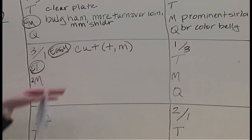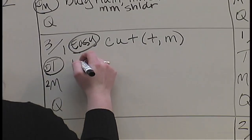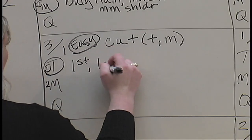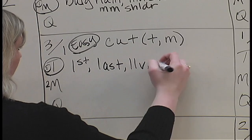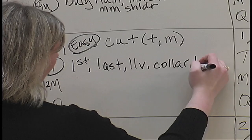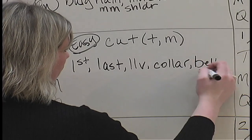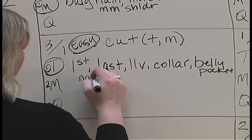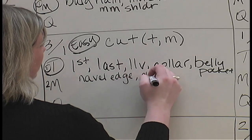The first thing — trimness was the most important — so we want to bring out that carcass 3 had advantages opposite the first rib, last rib, last lumbar vertebra, over the collar, extending from the belly pocket to the navel edge, and less fat over the clear plate.